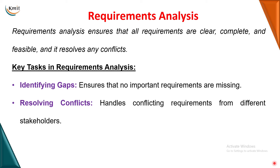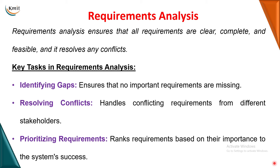For example, when involving a group of people in requirements collection, one group may want a high-standard user interface while the development team prefers a simple one — that is a conflict. Resolving such conflicts is done during the requirements analysis phase. The next task is prioritizing requirements: after identifying gaps and resolving conflicts, you assign a priority or ranking to the requirements, and development proceeds in that ranking order.